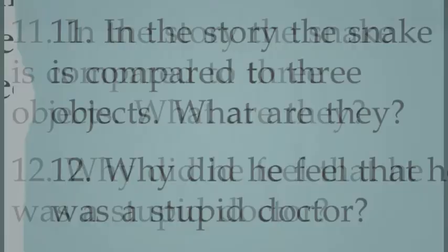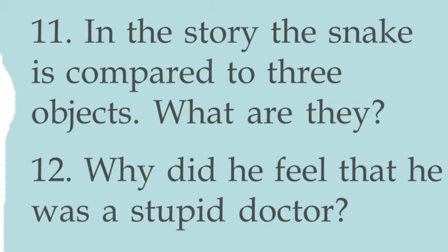Question 11: In the story, the snake is compared to three objects. What are they? The snake is compared to: a rubber tube, a thick leather rod or a rod made of molten fire, and a human being — since the doctor also tried to find out the gender of the snake, comparing it to a human. The answer: in the story the snake is compared to three objects — rubber tube, leather rod, and human being.